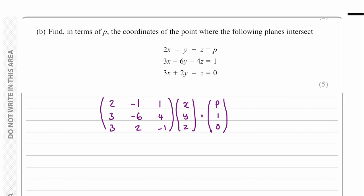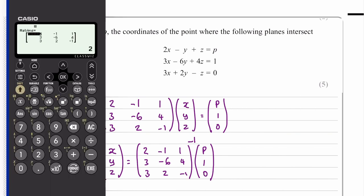So then to find when they intersect we can move this matrix to the right hand side by finding its inverse. So we get xyz and we can find this inverse on a calculator. So I've entered the matrix, we press catalog.